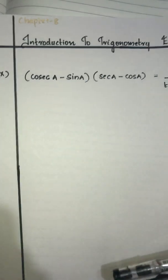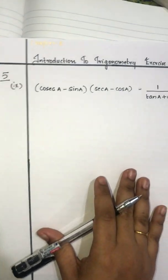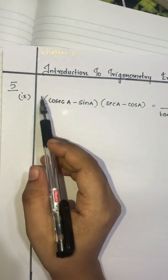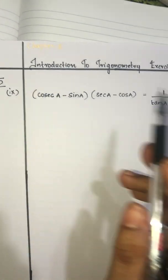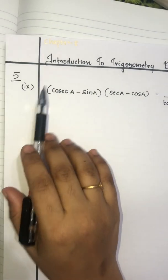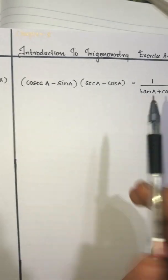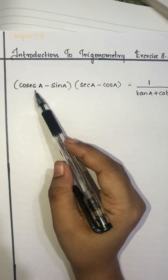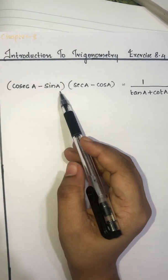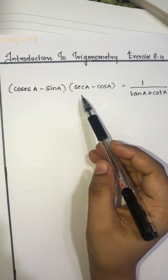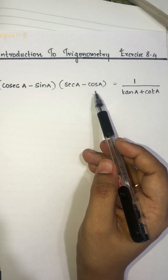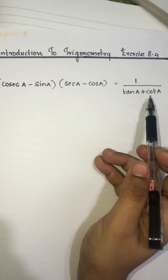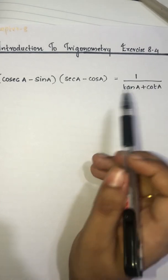Next question is the 9th sub-question of our 5th question. We need to prove that (cosecA − sinA)(secA − cosA) is equal to 1/(tanA + cotA).